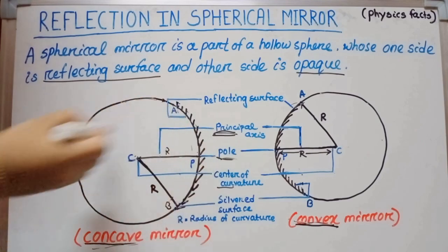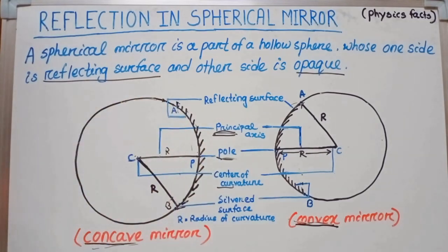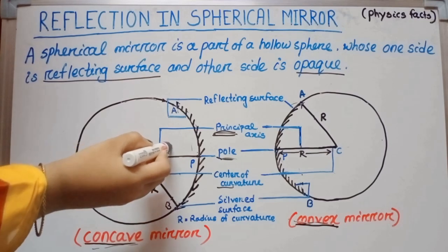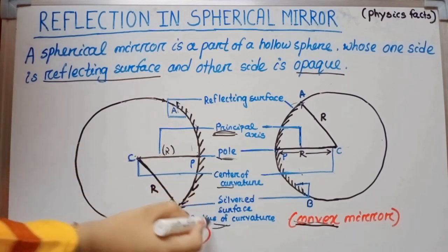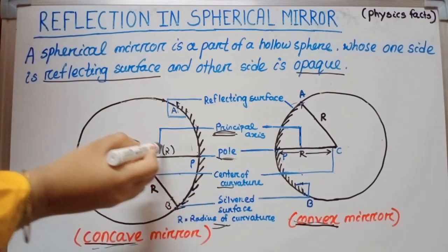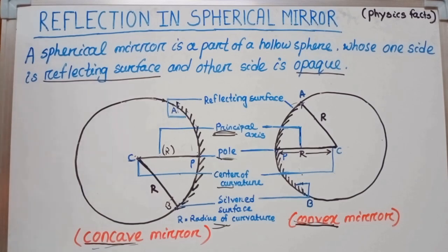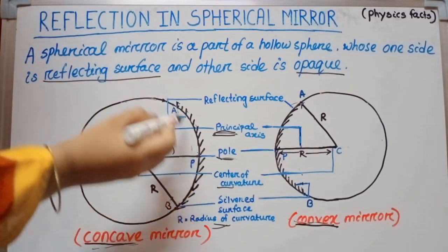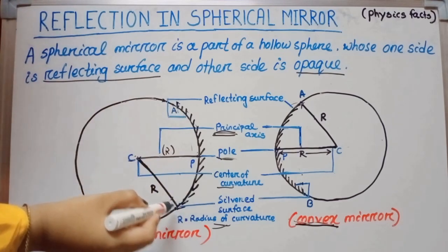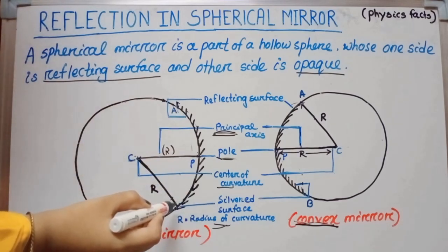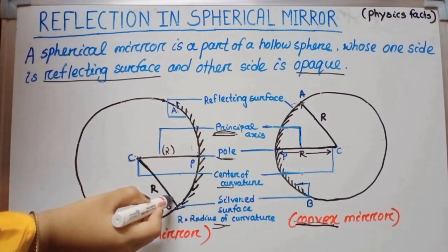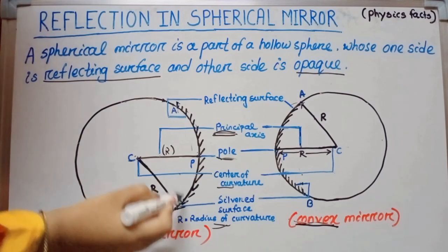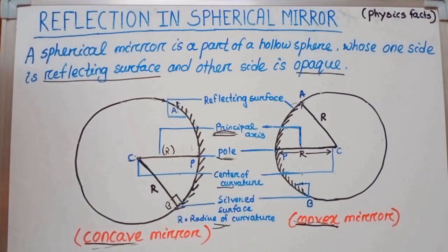The distance between the pole and the center of curvature is called the radius of curvature, denoted by R. Alternatively, the radius of the sphere of which the mirror is a part is also known as the radius of curvature. That radius is always perpendicular to the surface of the mirror.